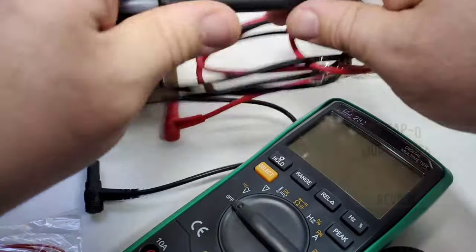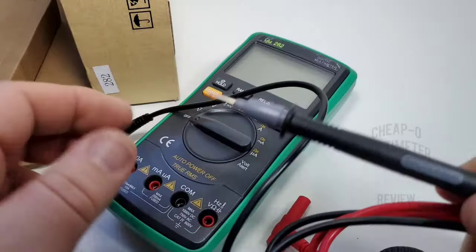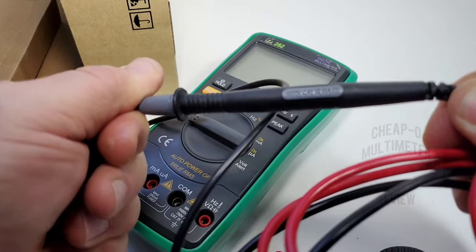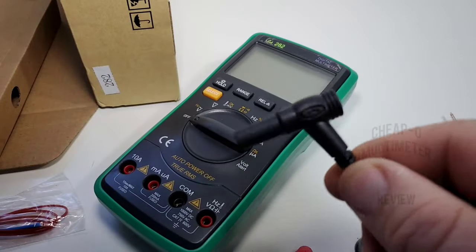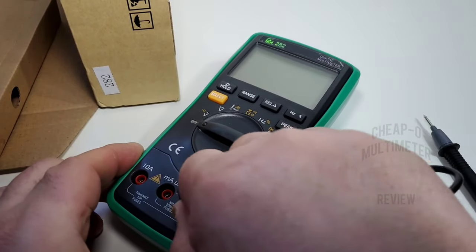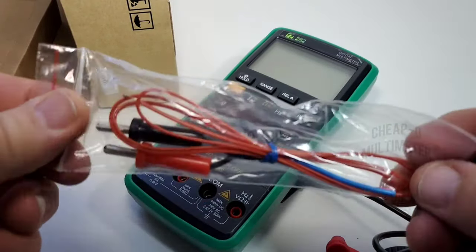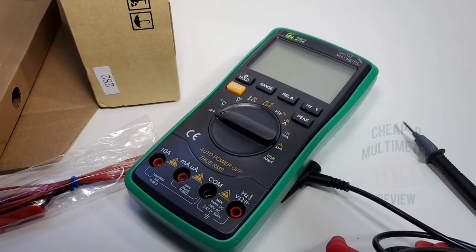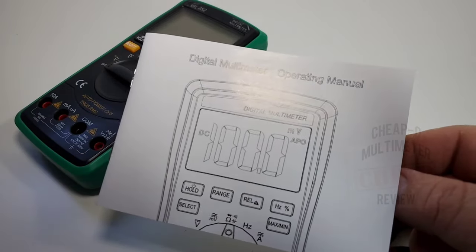And a thermocouple. Now the test leads are, let's just call them adequate. Nothing to get too excited about. They have a little bit of that cheesy cheap feeling, but I guess they'll do the job. We have a 1000 volt Cat III, 10 amp rating on there, but take that with a grain of salt. The shroud itself is fairly long and decent, and it seems to stick in the meter nice and snug. That thermocouple is just your standard input jack style thermoprobe.